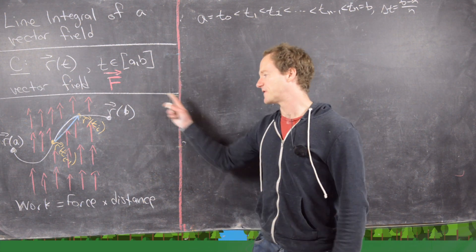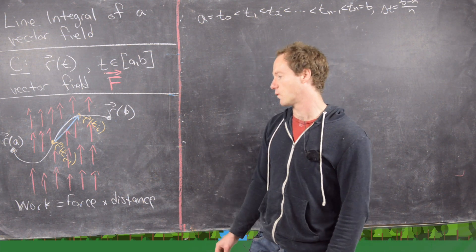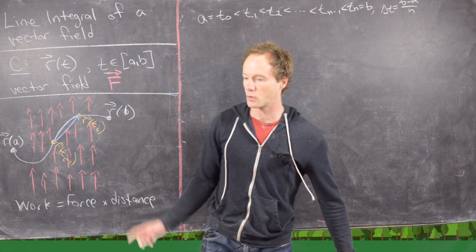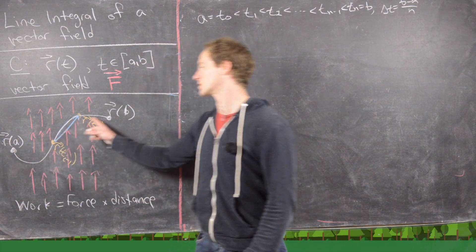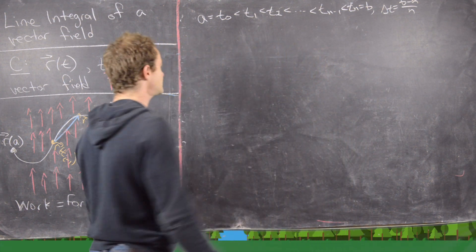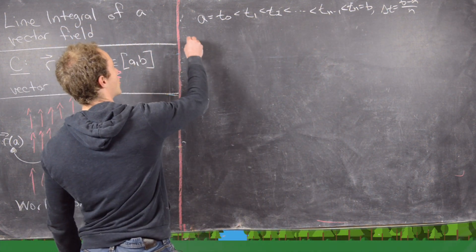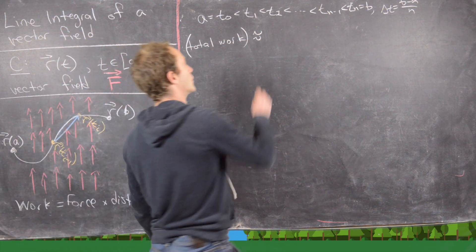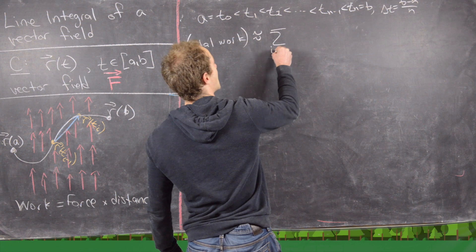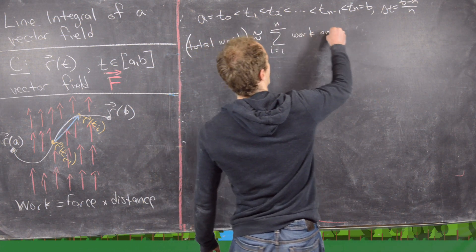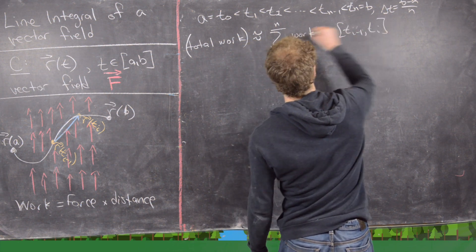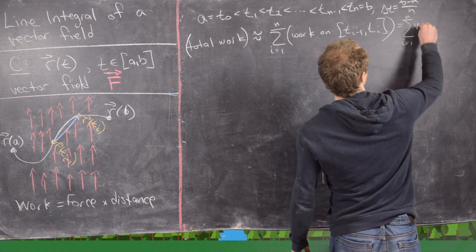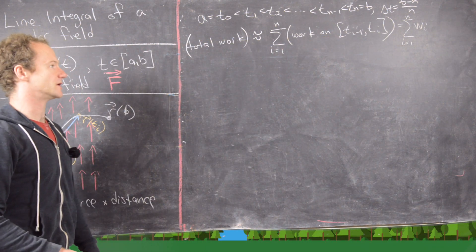We're also going to need the simple formula: work equals force times distance. The line integral of a vector field should give us the total work, or total energy, required to move a particle along this path in this force field. The total work is approximately equal to the sum, i equals 1 to N, of the work on each subinterval T(i-1) to Ti — we'll call that Wi.